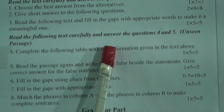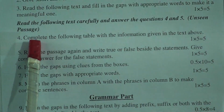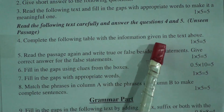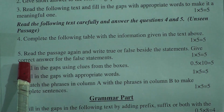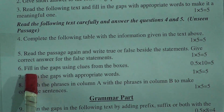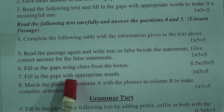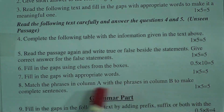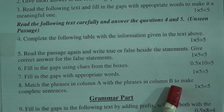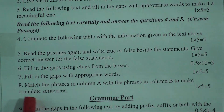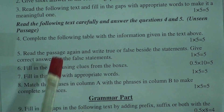Then the unseen part: read the following text carefully and answer questions four and five. Complete the following table with the information given in the text: five marks. True and false. Fill in the gaps using clues from the boxes: five marks. Fill the gaps with appropriate words: five marks. Match the phrases in column A with the phrases in column B to make complete sentences. These are the question patterns of English First Paper.